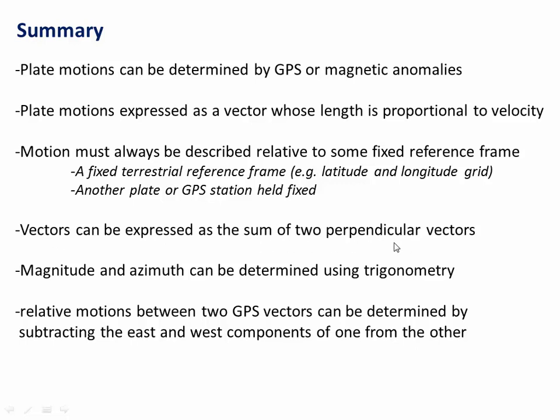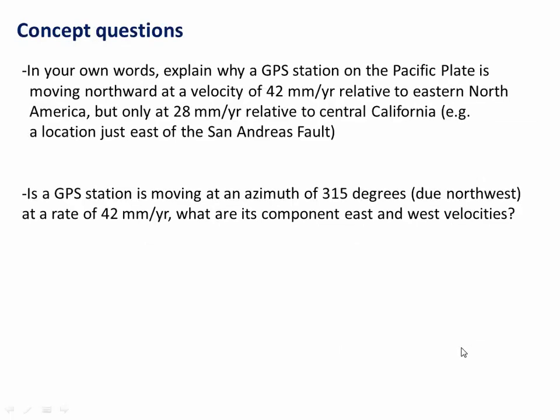Vectors can be broken down and expressed as the sum of two perpendicular vectors, for example east-west and north-south. And their magnitude and azimuth can be determined using trigonometry. And finally, we showed that the relative motions between two GPS vectors can be determined by subtracting the east and west components of one from the other. I'll leave you with these concept questions, and we'll see you in class.